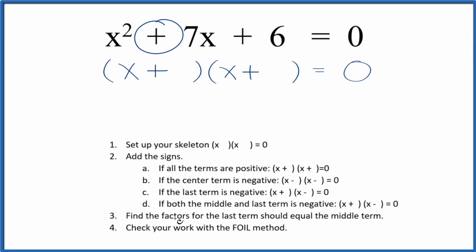Now that we have these signs, we can find the factors for the last term, that's the 6, that should equal the middle term. I know that for 6, the last term here, 1 times 6, that gives me 6, and 1 plus 6 would give me 7. So I'm just going to write 1 and 6 here.